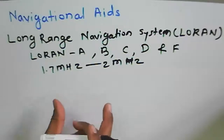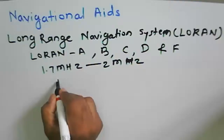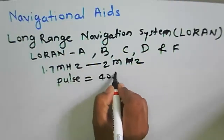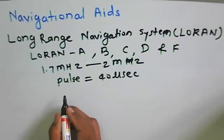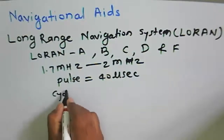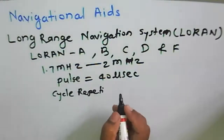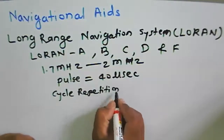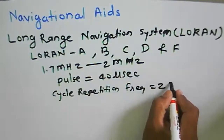LORAN transmits a pulse of 40 microseconds. The cycle repetition frequency is 25 pulses per second.